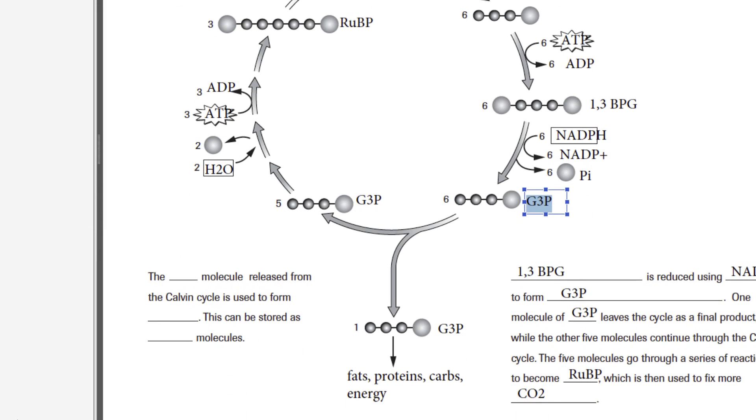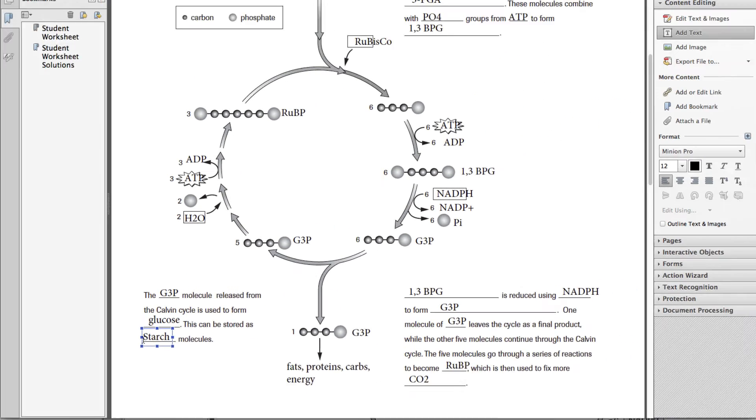Let's finish filling in these blanks and then we're done with this worksheet. The G3P molecule released from the Calvin cycle can be used to form glucose. That's typically the main product that we look at. And then glucose can be stored as starch molecules.